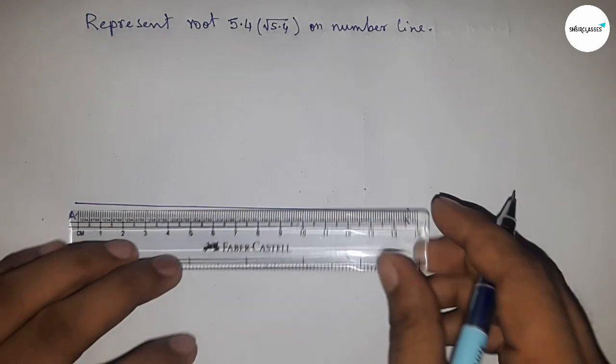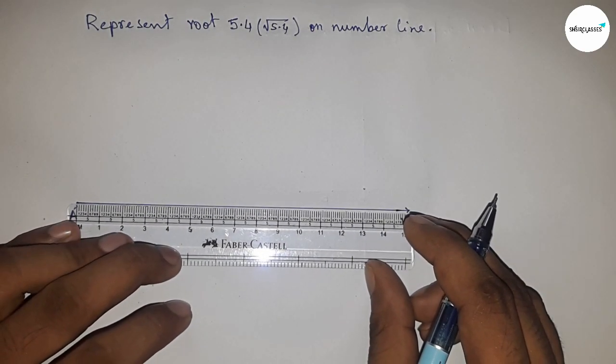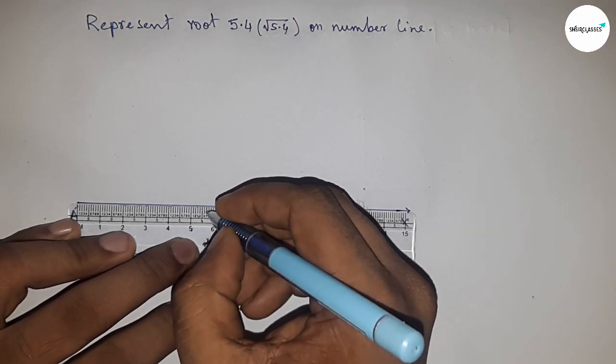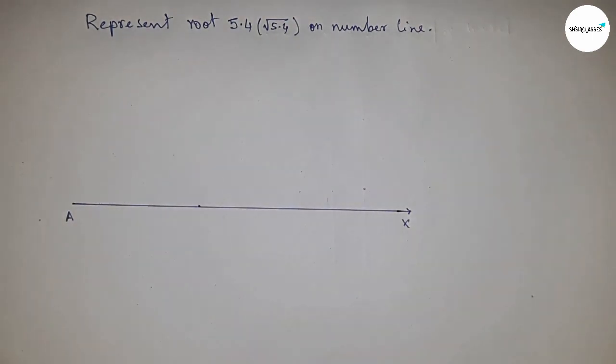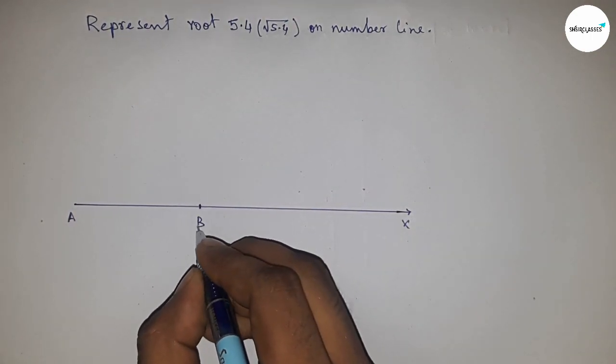Next, take a length of 5.4 centimeters. So this is 5.4 centimeters, and take this as point B. So this is AB equal to 5.4 centimeters.